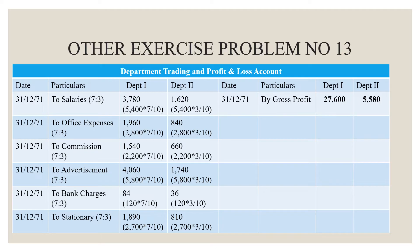Commission is split in the ratio 7:3. That is $2,200 × 7/10 for Department 1 and $2,200 × 3/10 for Department 2. Advertisement is $5,800. For Department 1: $5,800 × 7/10 = $4,060. For Department 2: $5,800 × 3/10 = $1,740.